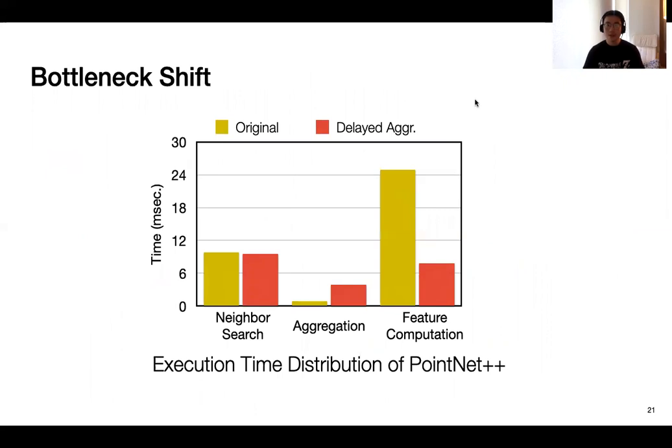So as we apply the optimization, we can see tremendous performance gain. So here, as we do the characterization again, we can see that the computation time of feature computation has dropped tremendously. However, here, the aggregation time also increases. And from now on, my partner Yufeng will introduce how we solve this problem by hardware co-design.